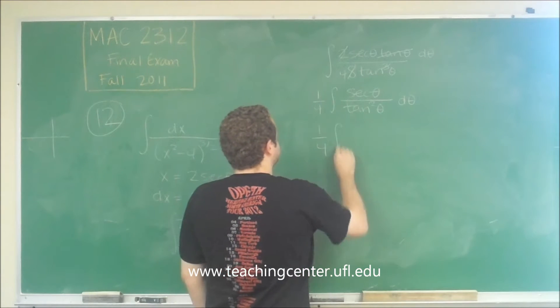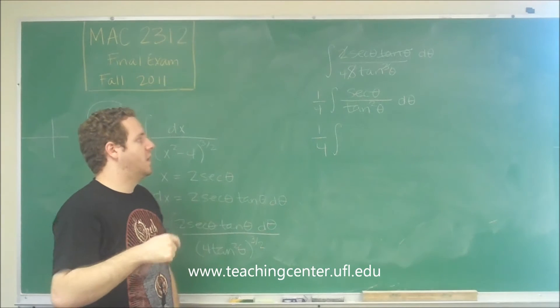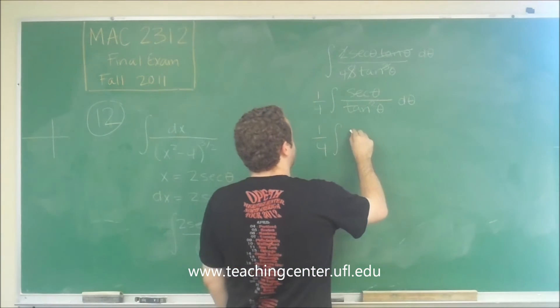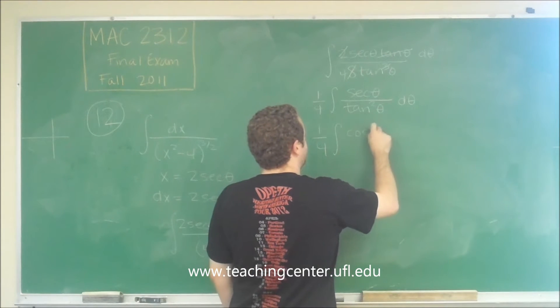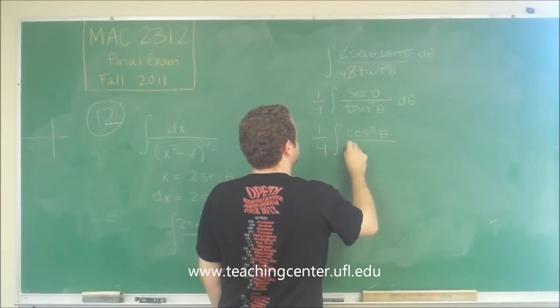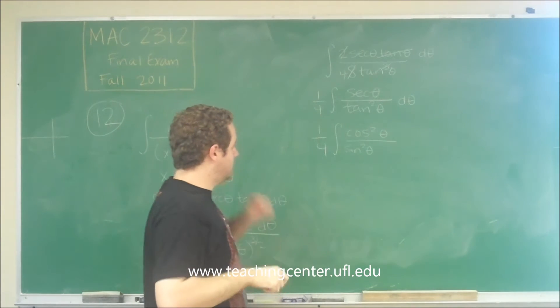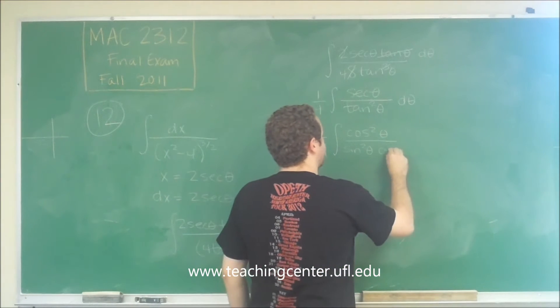So when we do that, we'll get the integral tangent squared on the bottom is cotangent squared. So we can write that as cosine squared theta over sine squared theta. And secant theta would have a cosine in the denominator, so we can have cosine theta here.